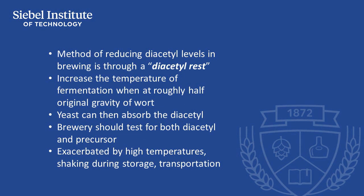The most common method of reducing diacetyl levels in brewing is through a diacetyl rest. In lager fermentation, this means increasing the temperature of fermentation at a point where the fermenting beer has reached roughly half its original gravity. This will speed the conversion of precursor to diacetyl, and the yeast can then absorb the diacetyl while there's still sufficient yeast in suspension. In ale fermentations, this means leaving the beer at fermentation temperature until the diacetyl is at its desired level.